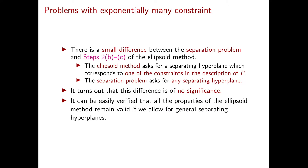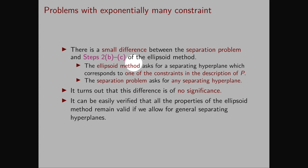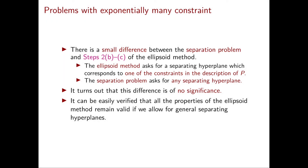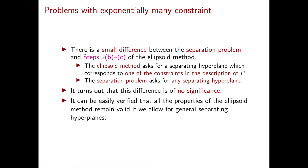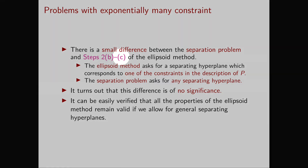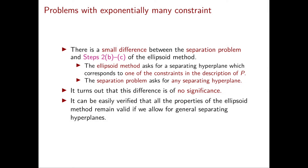There is a small difference between the separation problem we just defined and steps 2B and 2C of the ellipsoid method. In the case when the vector is not in the polyhedron, the ellipsoid method asks for a separating hyperplane among the constraints in the description of P. The separation problem asks for any separating hyperplane. It turns out this difference is of no significance — the ellipsoid method also works in the same way if in step 2C we obtain any separating hyperplane instead of one among the constraints.